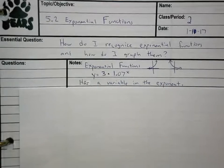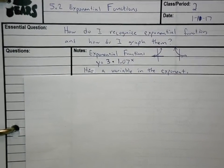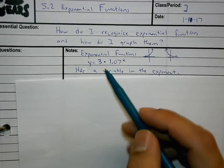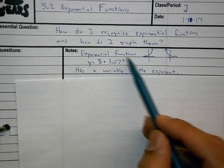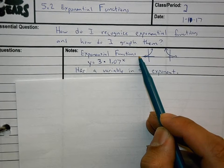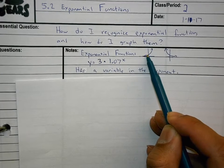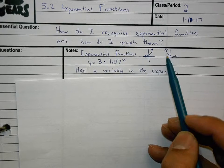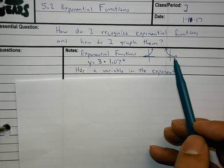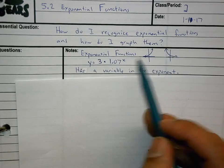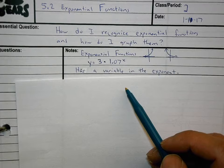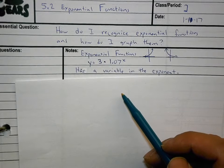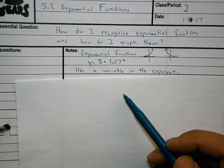In Unit 0 you learned what exponential functions were. We graphed exponential functions as things that were going along and then would exponentially get bigger — exponentially increasing — and then there were ones that were exponentially decreasing. Both of these were exponential functions. In this unit we're working entirely on exponential functions.